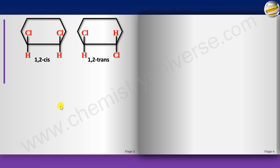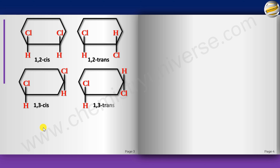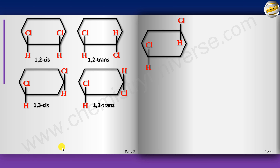In rings, it's not necessary for the groups to be on directly adjacent carbons — you can have 1,3-cis or 1,3-trans, or even 1,4-cis and 1,4-trans. In IUPAC naming, substituents get the lowest possible numbers, so always number the ring to minimize the locants. For example, in a six-membered ring with substituents at 1 and 3, number so that the substituents receive the lowest set of numbers.